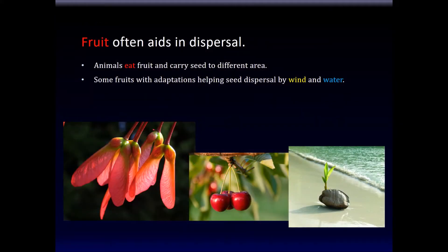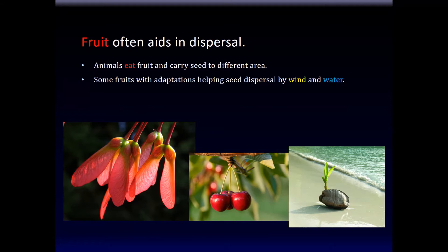The fruit has many functions. One is that it helps in dispersal of the plant — animals, for example, can eat the fruit and carry the seeds in their intestines until they deposit them somewhere far from the original plant. Some fruits have adaptations helping seed dispersal by wind and water, as you see before you. Coconut, for example, is buoyant and can float in water and travel far away from the parent plant.